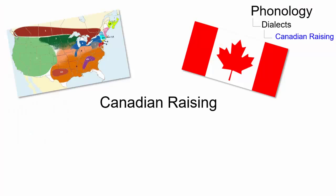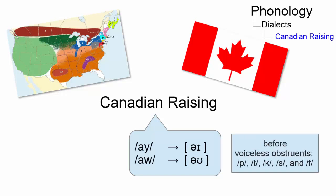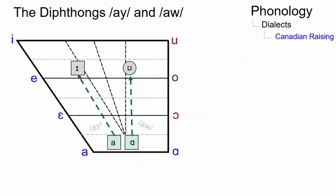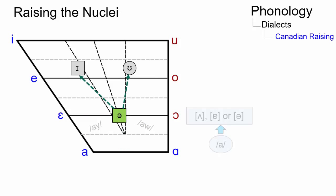Canadian raising is a vowel shift in many dialects of North American English where the diphthongs raise to mid-vowels before voiceless obstruents. Generally, the diphthongs have low vowels at their nucleus. In Canadian raising, the nucleus of the diphthong changes from the low vowel to a mid-low vowel.